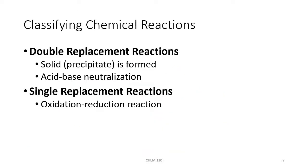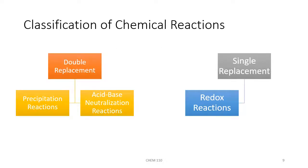The major goal for the first half of Chapter 4 is writing different types of chemical reactions. Double replacement reactions will come in two major types: solids called precipitates being formed, and acid-base neutralizations. Then we'll look at single replacement reactions, specifically oxidation-reduction reactions. There are other types not in your textbook that we'll see in lab, such as gas-forming reactions, combination reactions, and decomposition reactions.